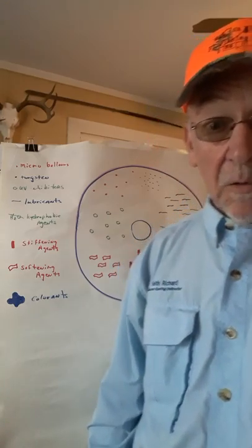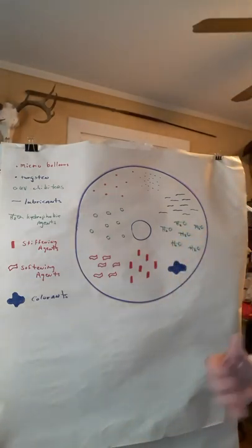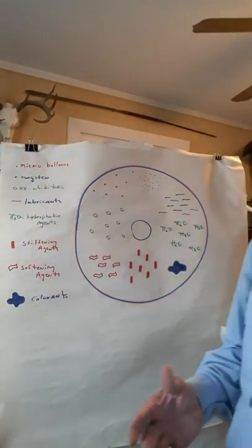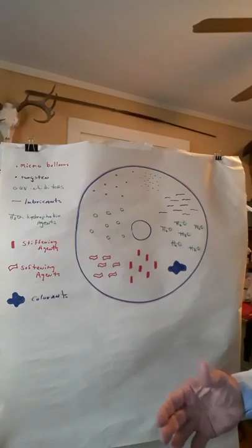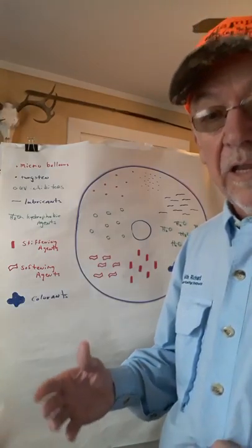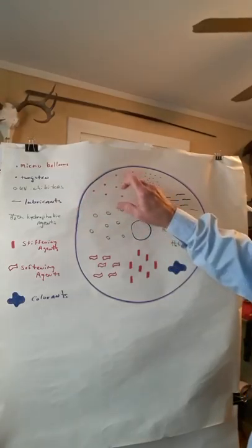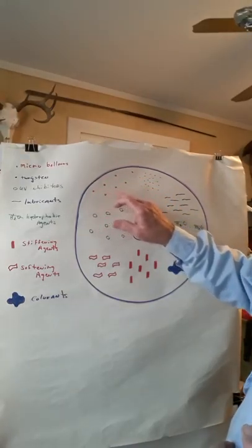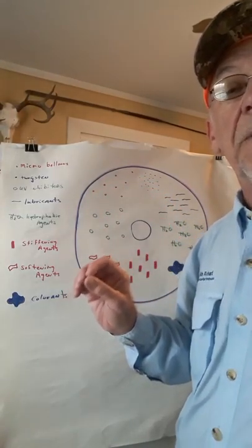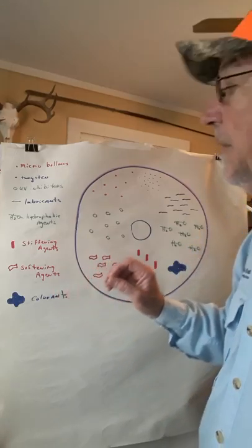Often times I'm asked what are the makeup of fly line ingredients and how do they help or hinder the action of the fly line. Well, you'll notice that if you're making a floating line, they might put little micro balloons, which are little bitty glass, microscopic glass beads in the fly line.